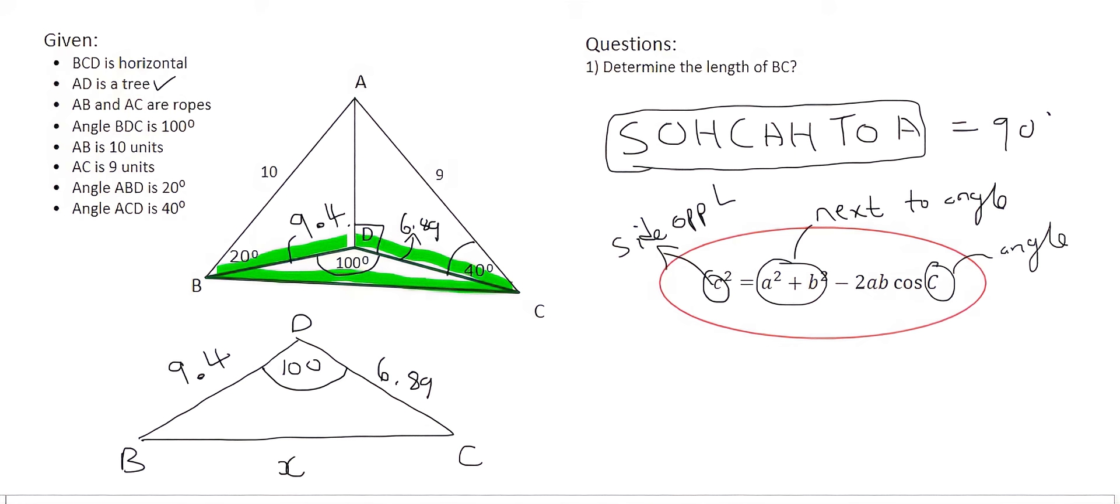The angle we're going to be using is the 100. The side opposite that is X. So we'll say X squared, or we could call it BC squared if you want, equals... Now the A squared and the B squared, those are the two sides that are next to the angle. So that'll be 9.4 squared plus 6.89 squared minus 2, then the AB will just be 9.4 times by 6.89 times by the cos of the angle which is 100.